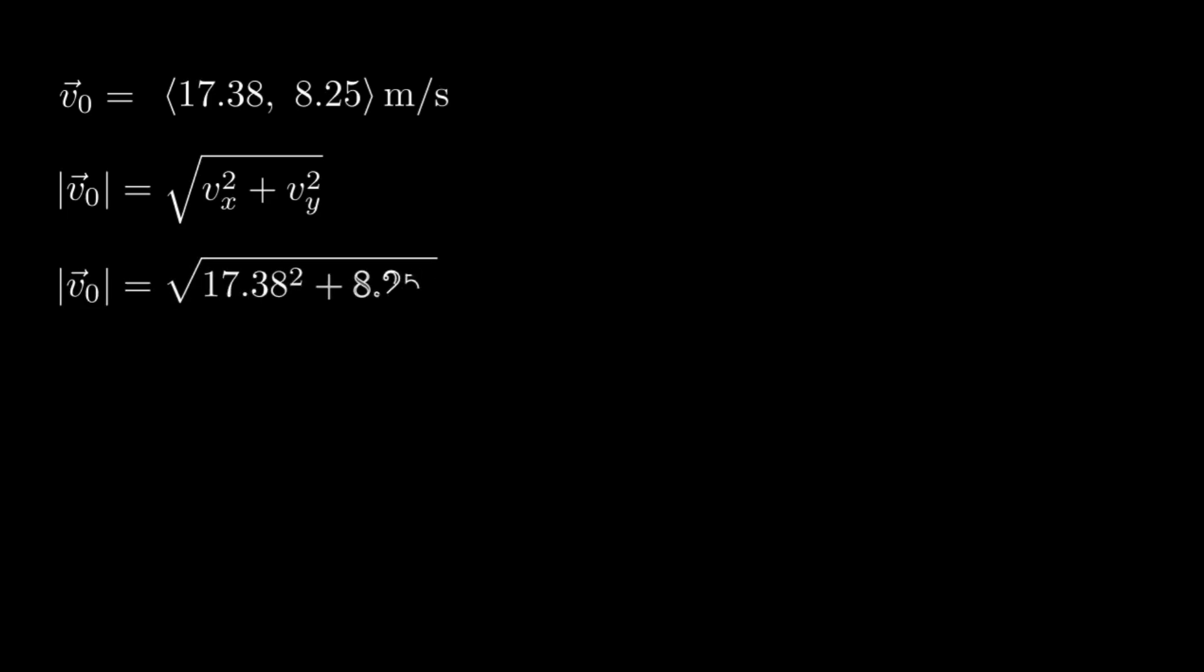So now we have both components of our velocity vector. Putting both of these together, we get the full initial velocity vector. To find the total speed, we take the magnitude of this very same vector using the Pythagorean theorem. The result is about 19.31 meters per second. To calculate the launch angle, we take the inverse tan of the velocities.